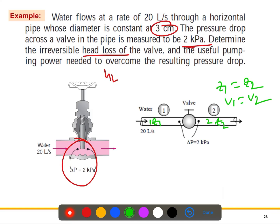Now if we write down the energy equation, you know it is for two points: P1/(ρg) + α1×v1²/(2g) + z1, this is the pump head.